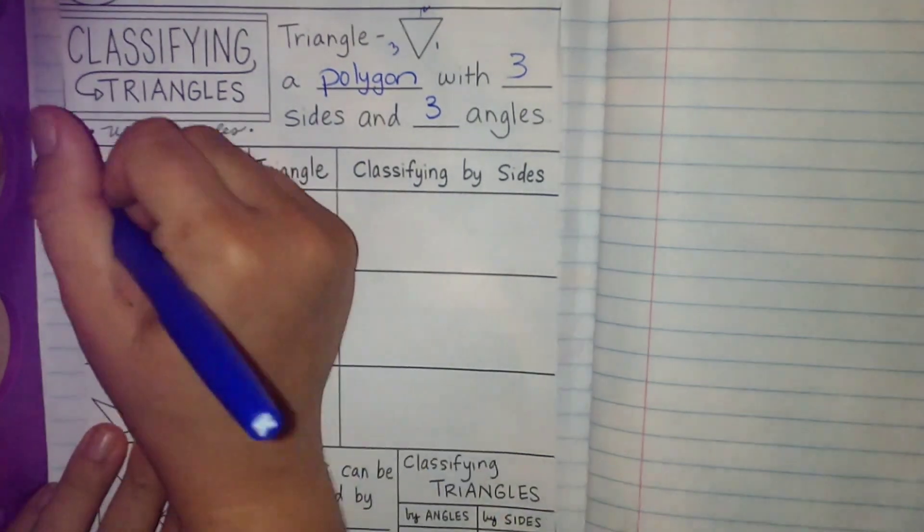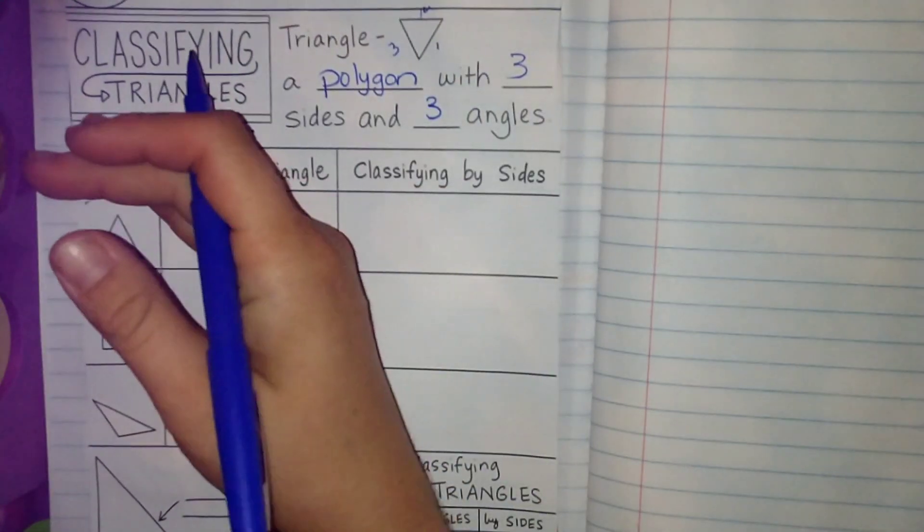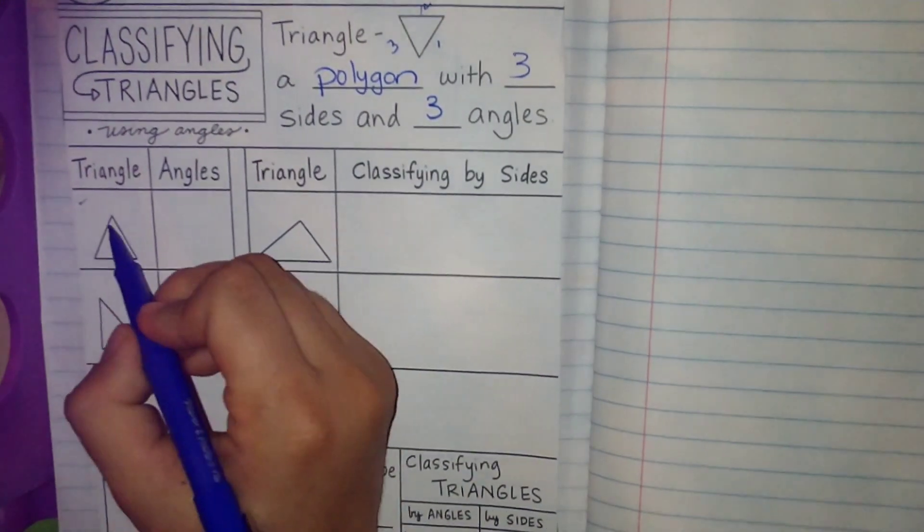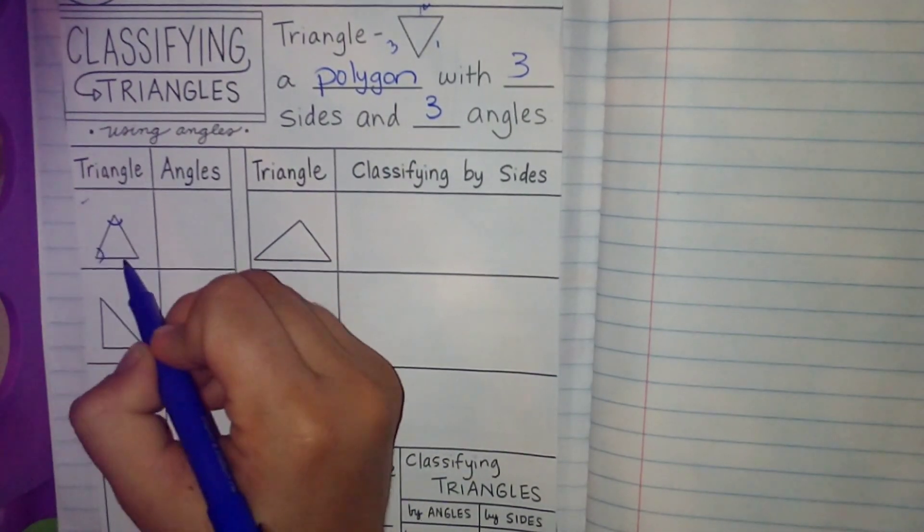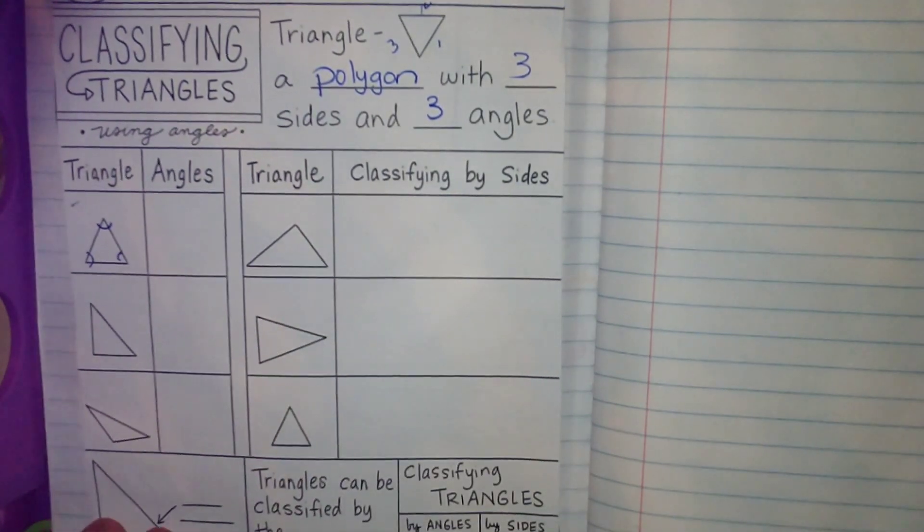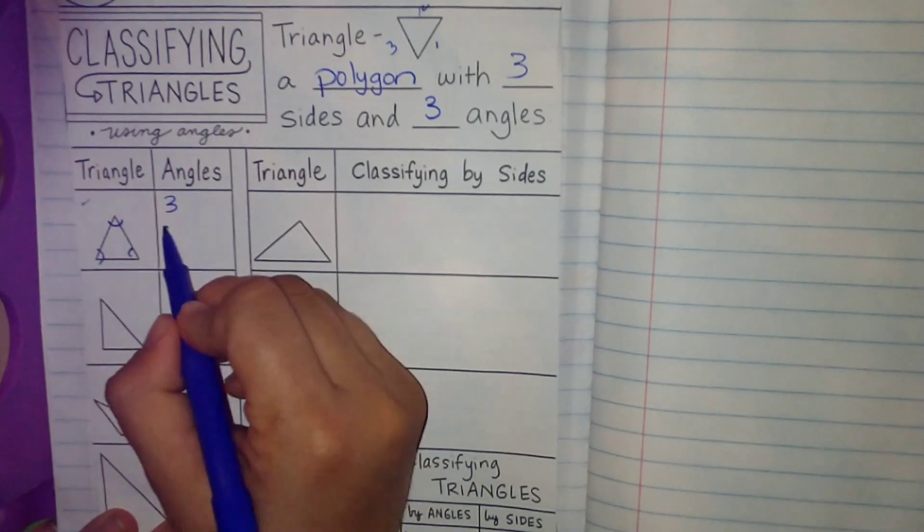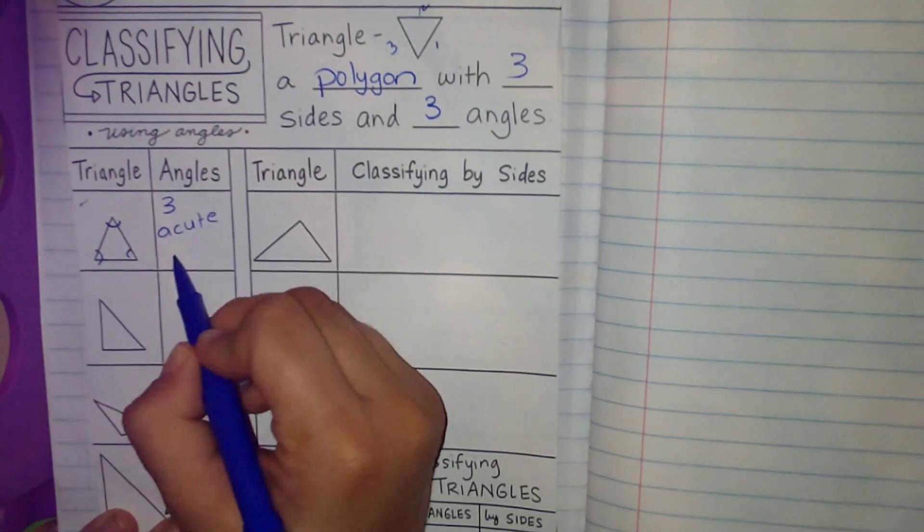We're going to just start with our angle classifications going by the angles. We're just going to review what we did in the other lesson. These are angles. I'm marking the angles. They are three acute angles.